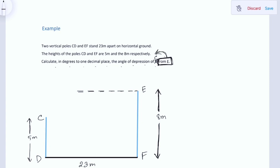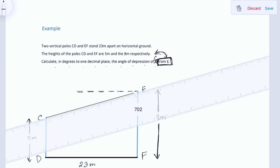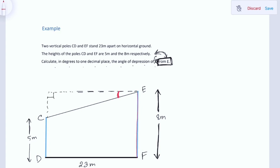Joining C and E will give us the line of sight. This is the angle of depression of C from point E. So we can just draw a right angle triangle here. Total EF is 8, so this one is also 8. 8 minus 5 will give us this part, which is 3.